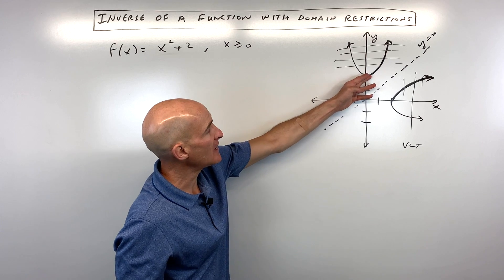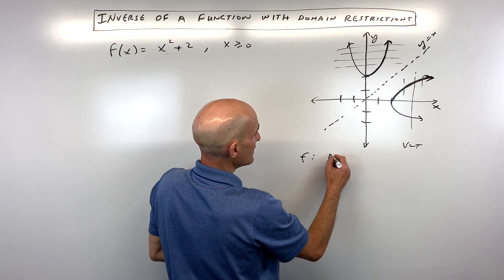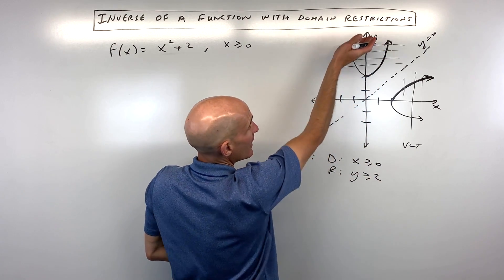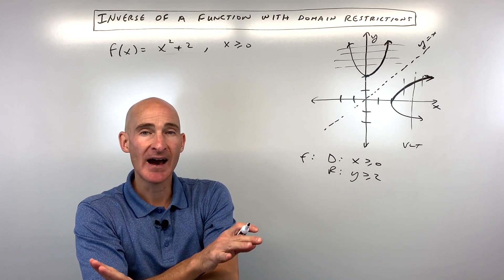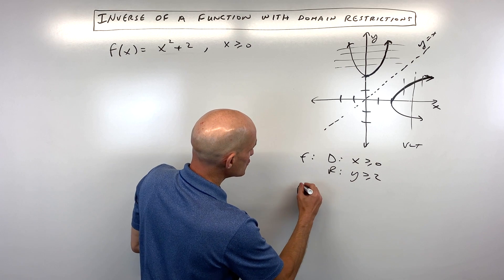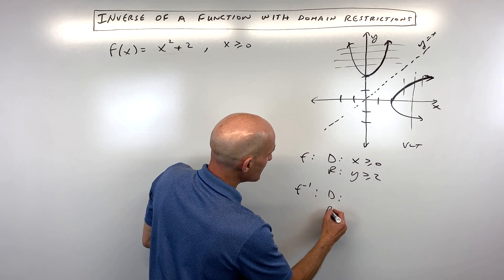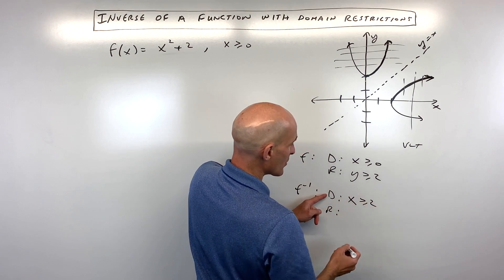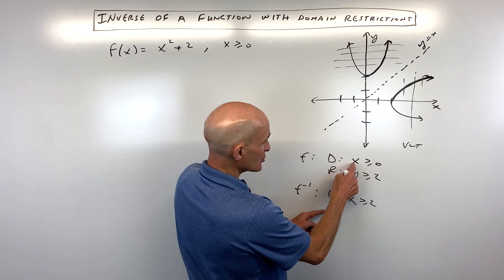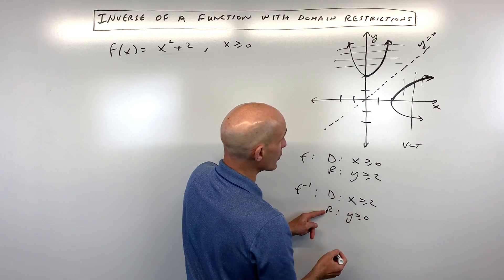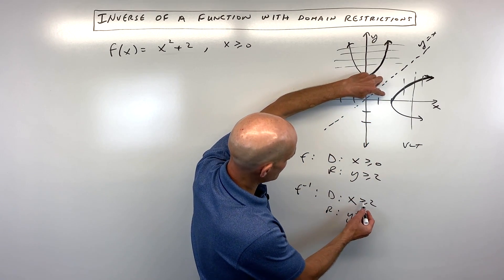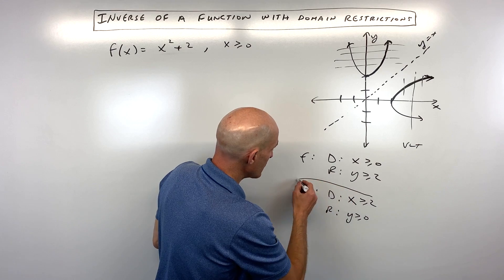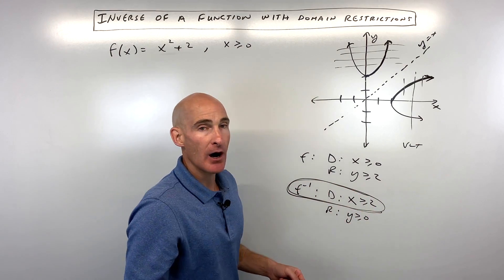The next thing I like to do is look at the domain. The domain of the original function is x is greater than or equal to 0, and the range is y is greater than or equal to 2. When you find the inverse of a function, because you're switching the x and y values, the domain and range switch. So for the inverse, the domain becomes x is greater than or equal to 2, and the range becomes y is greater than or equal to 0. You can see on the graph — yep, that makes sense. They're just switching.